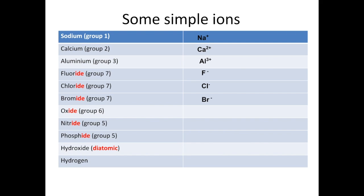Oxygen is in group 6, so it wants to gain 2 electrons. So the oxide ion is O2-. Nitrogen is in group 5, and so nitrogen will gain 3 electrons and form the N3- ion. And notice that's called the nitride ion. And phosphide ions would be P3-.